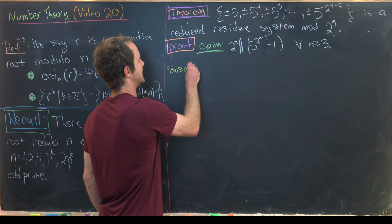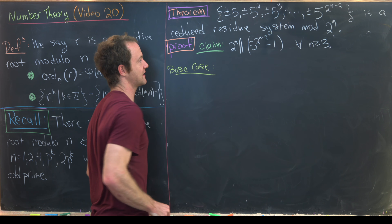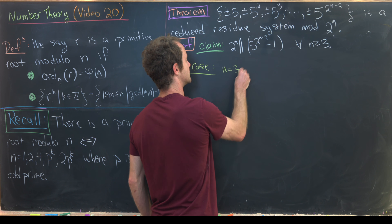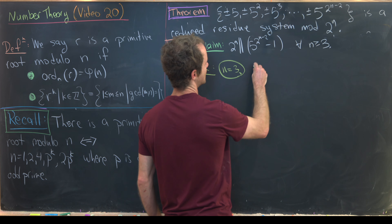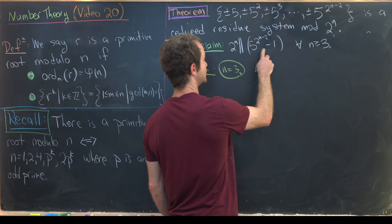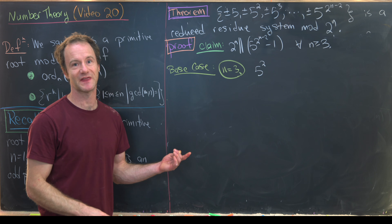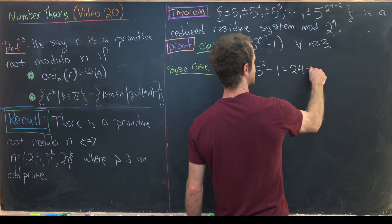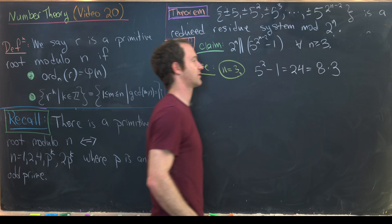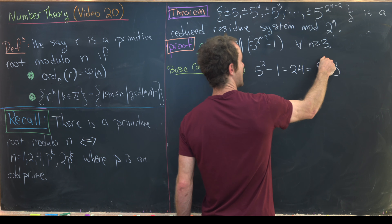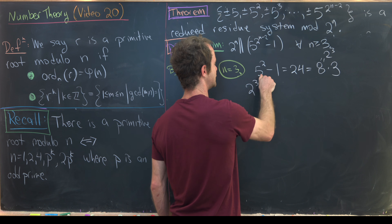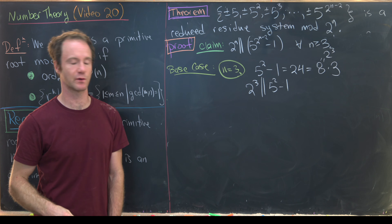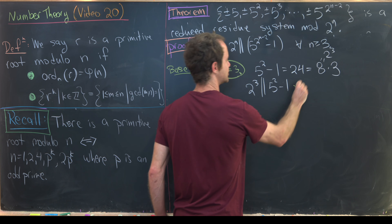Base case n = 3: We compute 5^(2^(3−2)) − 1 = 5^2 − 1 = 25 − 1 = 24 = 8 × 3 = 2^3 × 3. So 2^3 = 8 is the largest power of 2 dividing 5^2 − 1, confirming the base case.